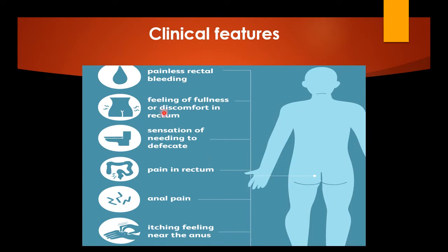The clinical features include painless rectal bleeding — I emphasize painless because classical bleeding from hemorrhoids is painless. Other features include a feeling of fullness or discomfort in the rectum, a sensation of needing to defecate, and pain in the rectum especially when there are complications such as prolapse, thrombosis, or infection. Anal pain is especially seen with thrombosed external hemorrhoids, along with an itching feeling near the anus.